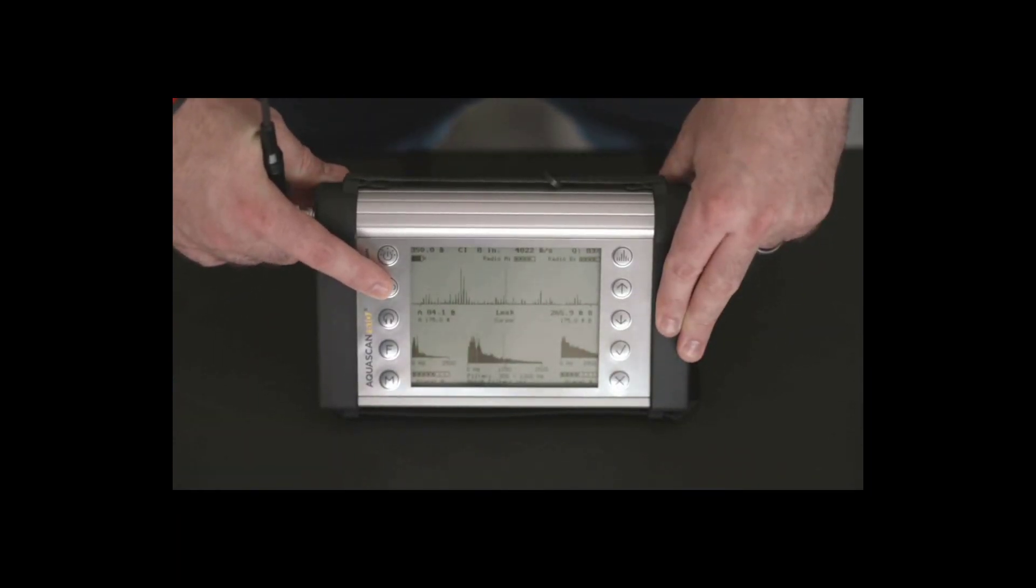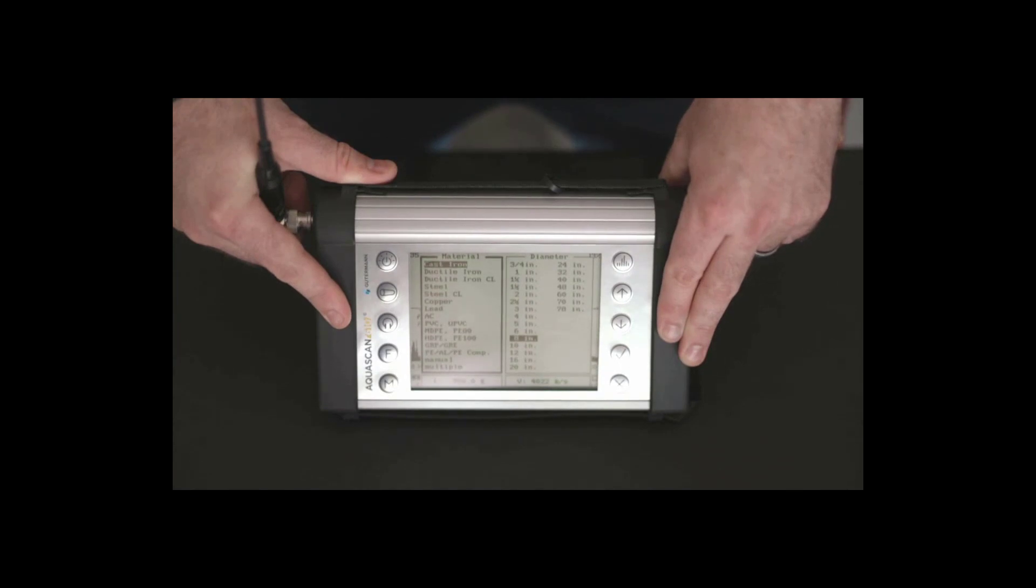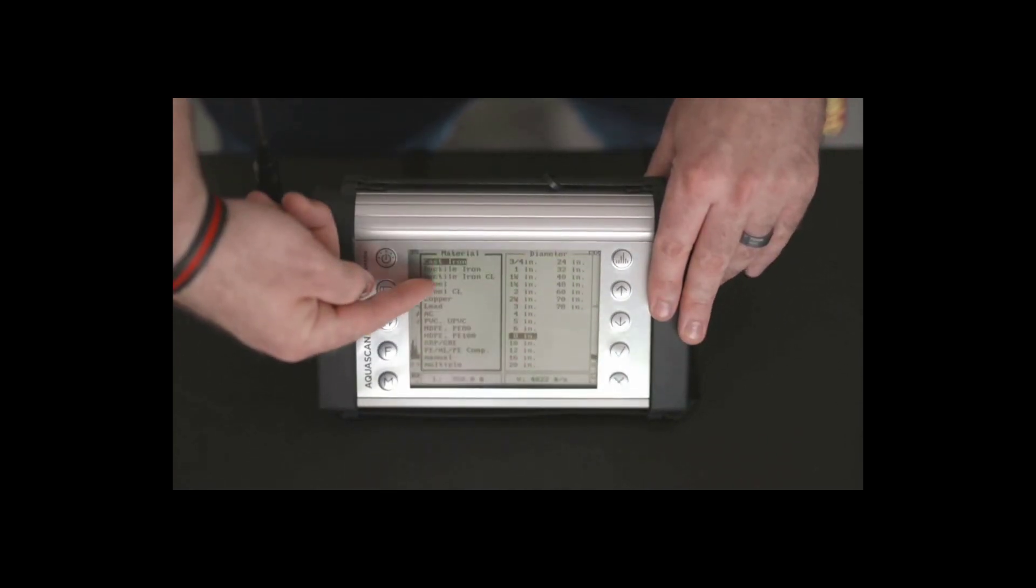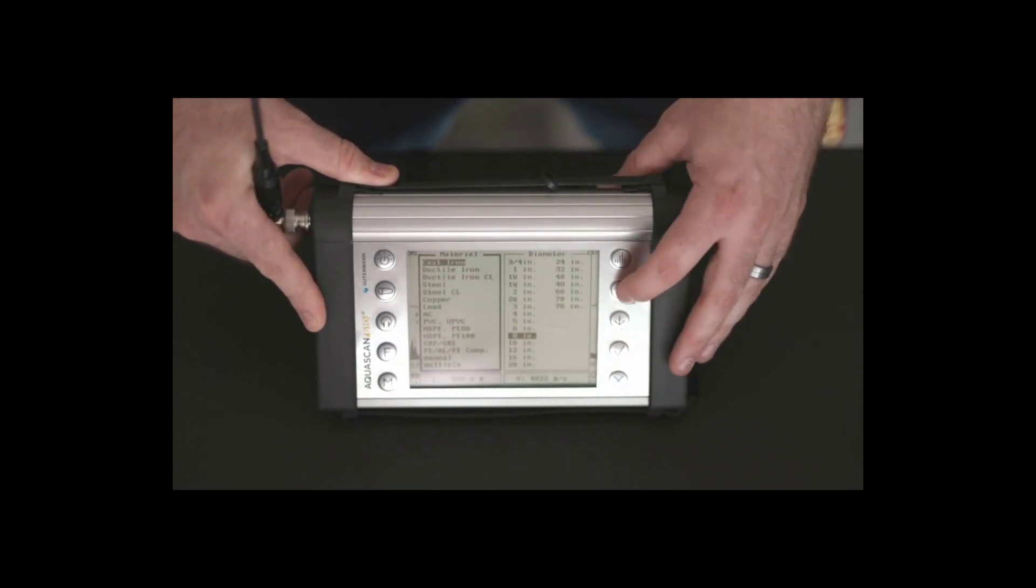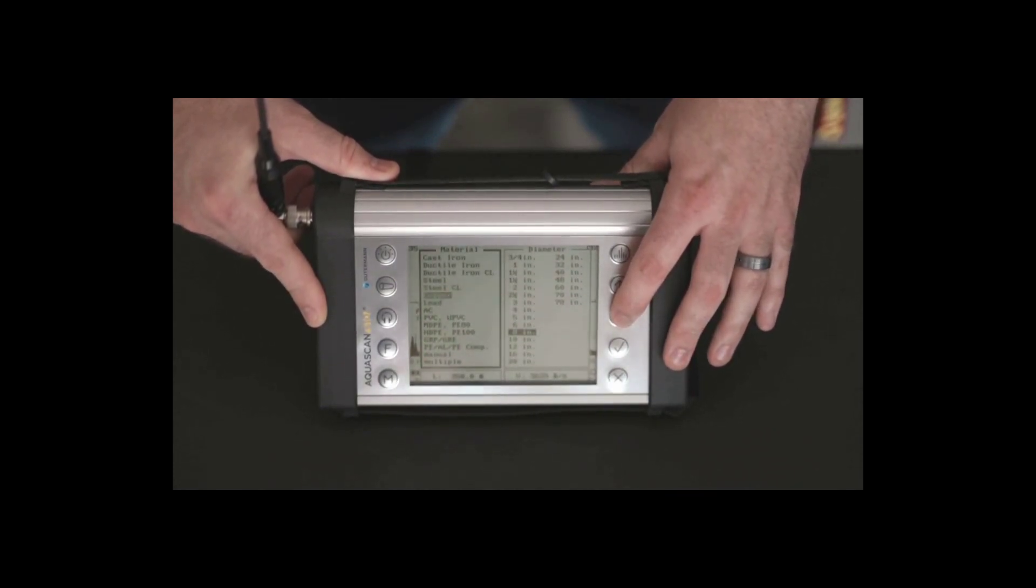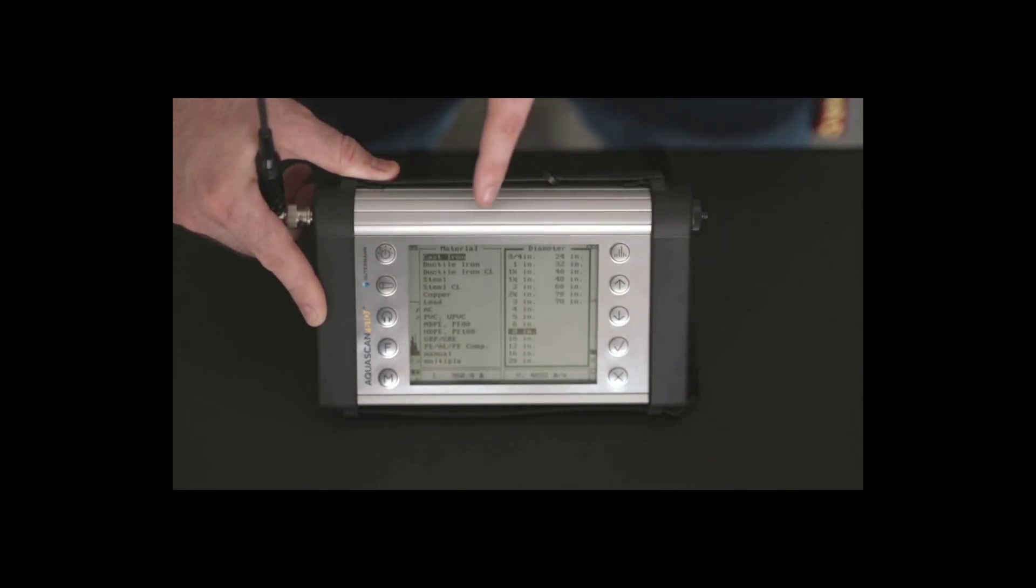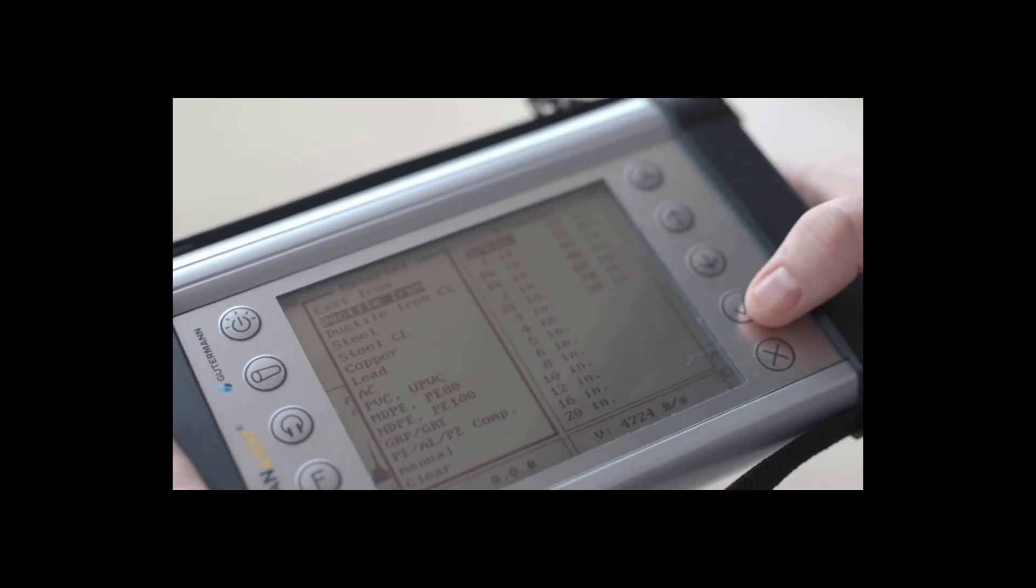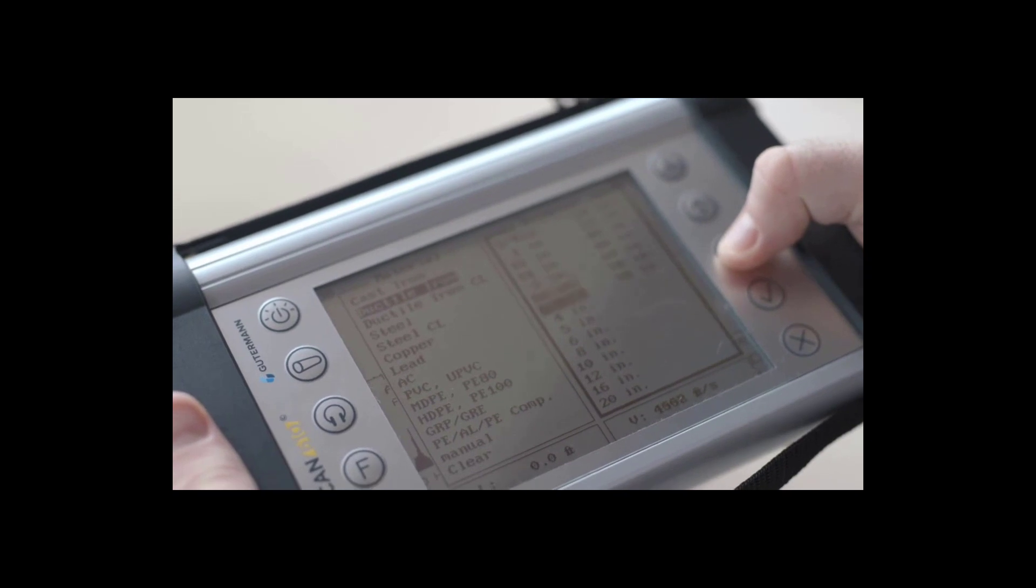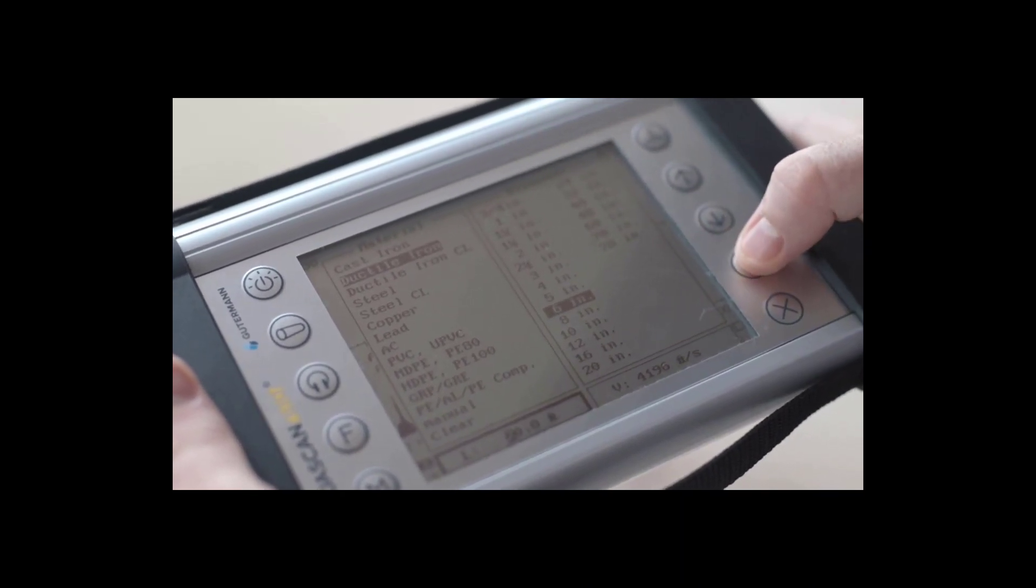For each correlation, the user must first input the pipe material, diameter, and length of pipe between sensors. The input of this data is done by selecting the pipe button. The first of the three boxes is active as indicated by the bold border. Use the up and down buttons to select the appropriate material. Press the check button to set your selection and move the bold border to the next box. Once again, scroll using the up and down buttons to select the pipe diameter. Press the selection and advance the bold border to the pipe length box. Set the pipe length box by using the up and down buttons to select the number and the check button to advance from thousands to hundreds to tenths to ones.